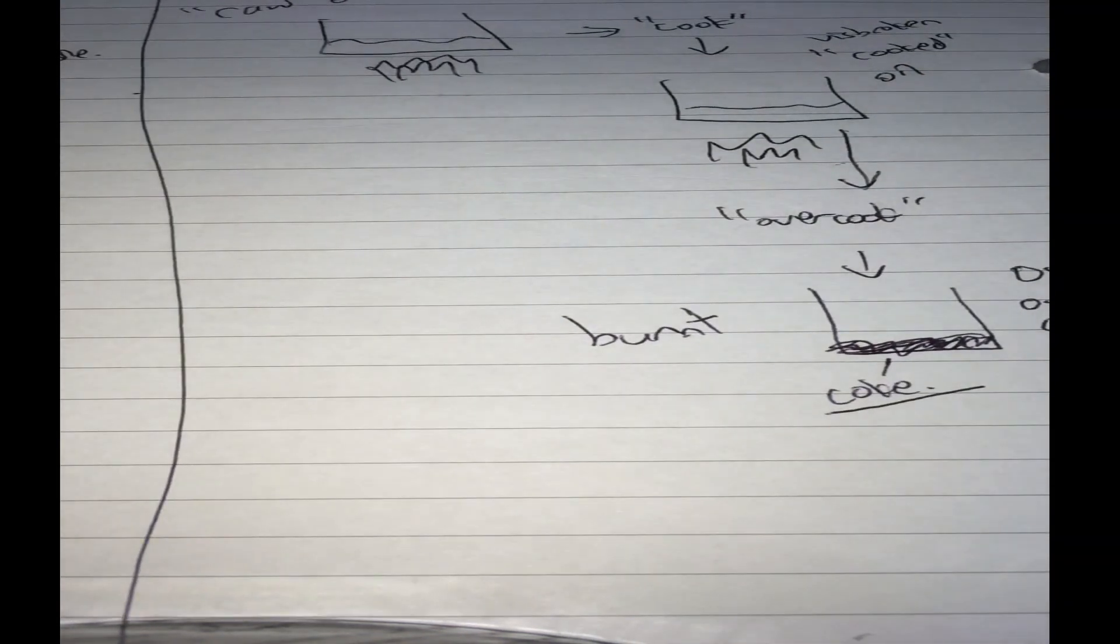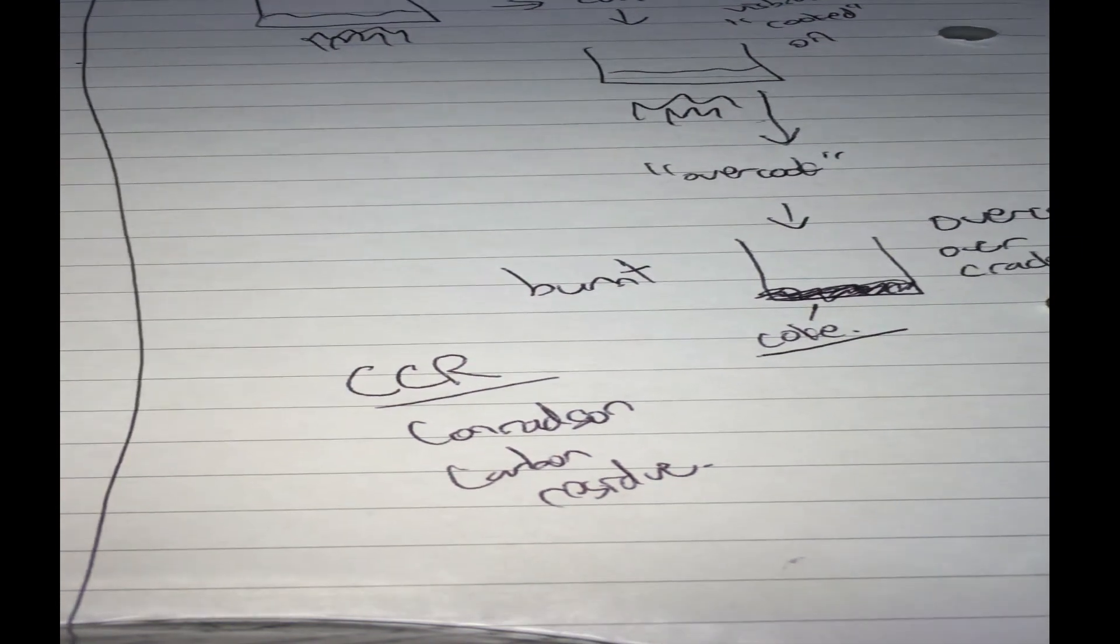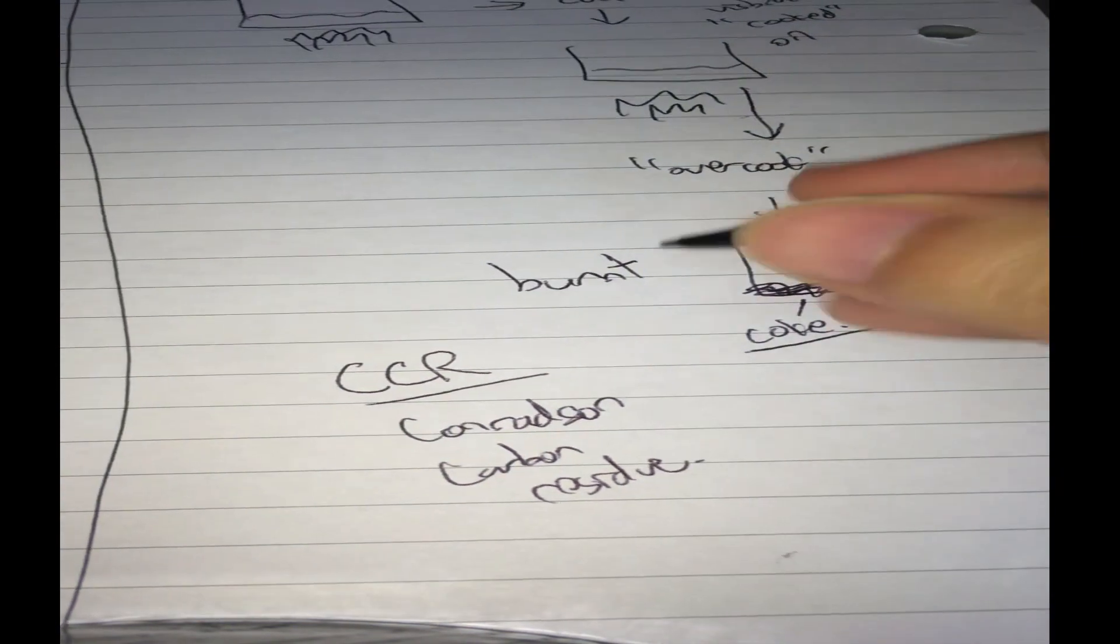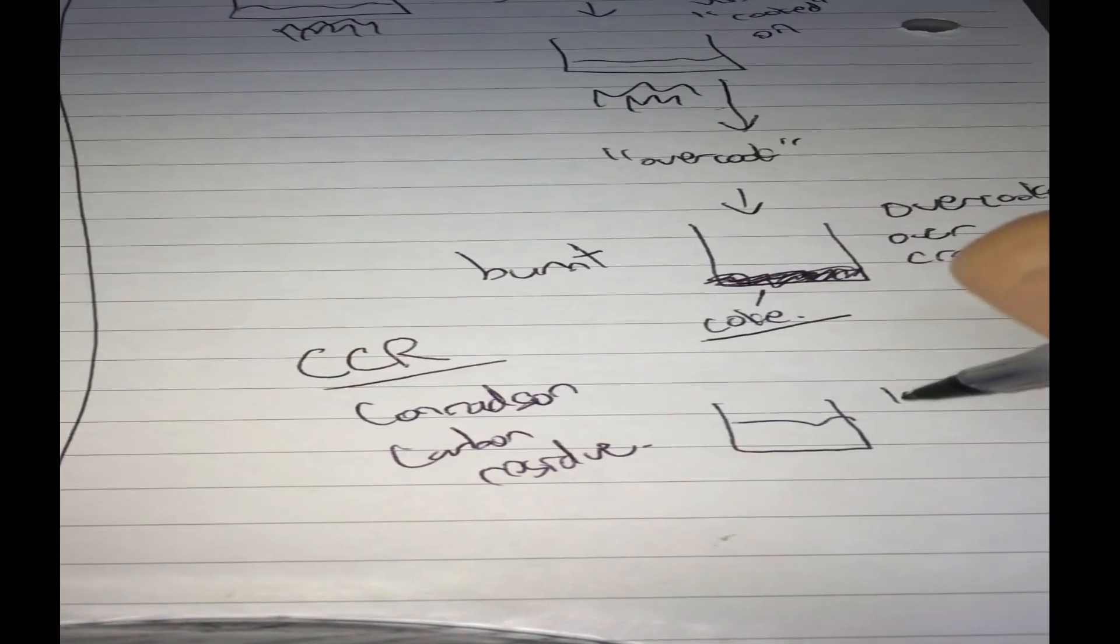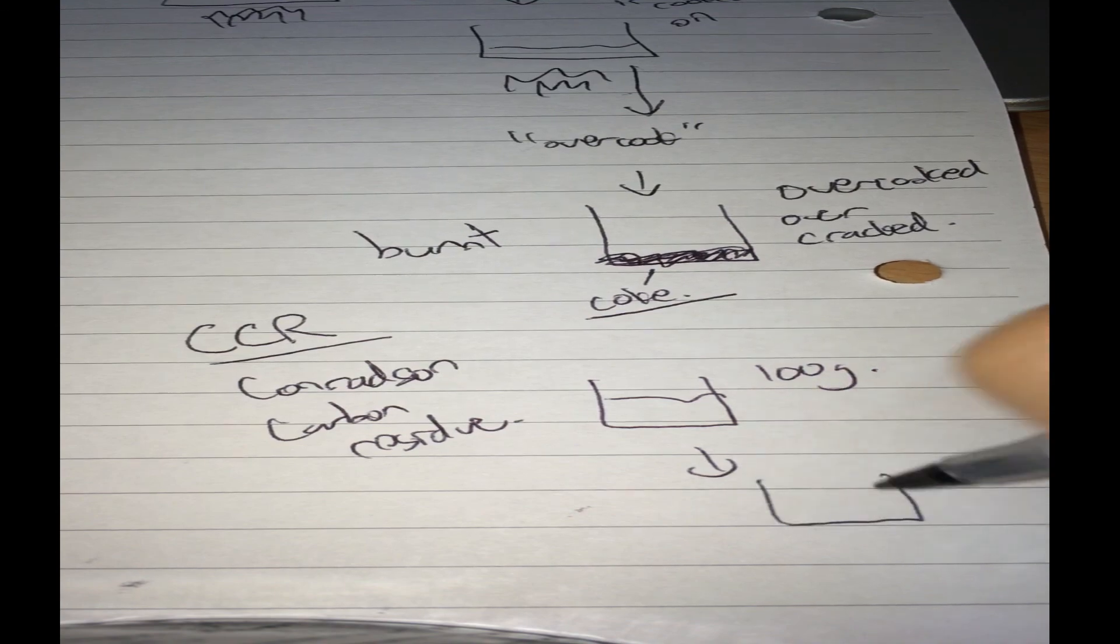And how likely is it able to form carbon? If you see your assay, you see this thing called CCR or Conradson carbon residue. So what they do in this Conradson carbon residue test is maybe take 100 grams of oil, they purposely overcook it until nothing's left.